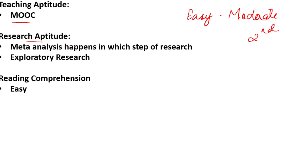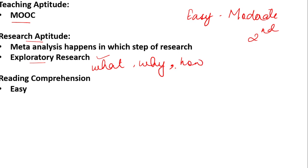While if you talk about research aptitude, there was a question on meta-analysis — in which step of research does meta-analysis happen. There was also a question on exploratory research. Exploratory research is used when the topic is new and the data you want is difficult to collect. It answers what, why, and how questions. For example, how social networking websites can be used to enhance a particular business — that is an example of exploratory research.